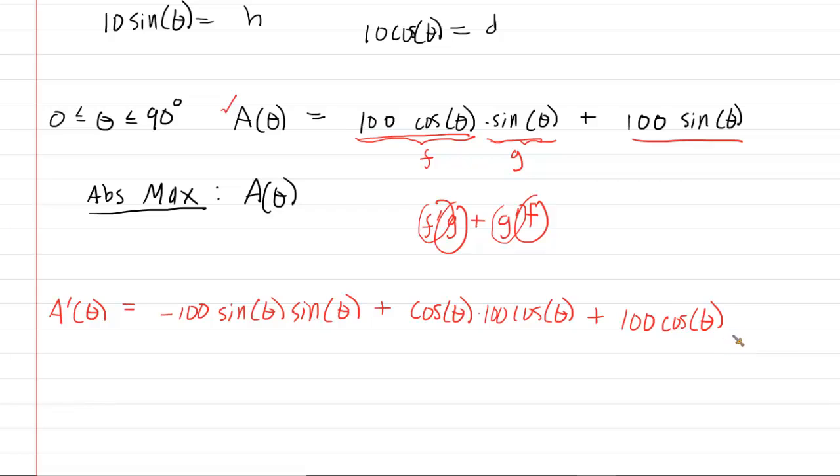We recall that once we compute the derivative, we set it equal to zero. This allows us to find a critical number or critical value for theta. Why don't we first factor out 100? Let's factor out that 100. This leaves us with negative - and we can multiply those signs - that becomes sin²(θ), plus cosine times cosine, so that's cos²(θ), and then plus cos(θ).